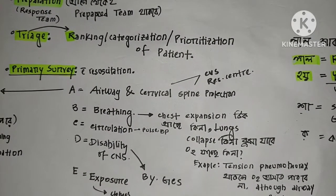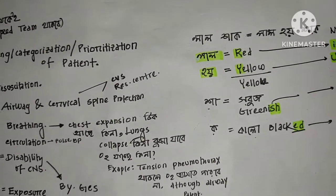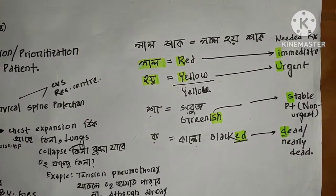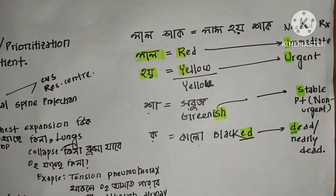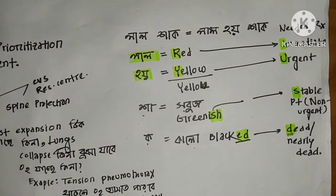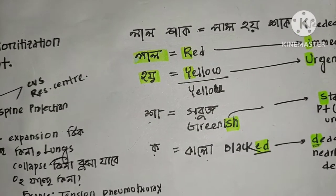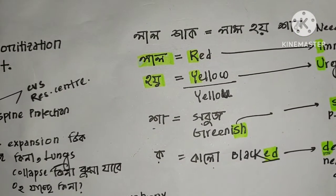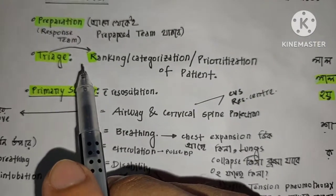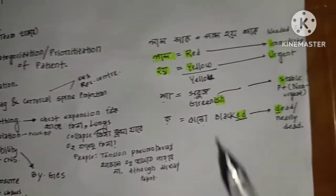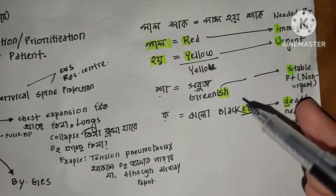Triage helps us determine how many patients need help immediately or can be delayed. If there is a patient in a massive severe condition in the hospital, we need to know what treatment the patient will require. This is important — we try to rank and categorize patients. We use different colors: red, yellow, green, and black.